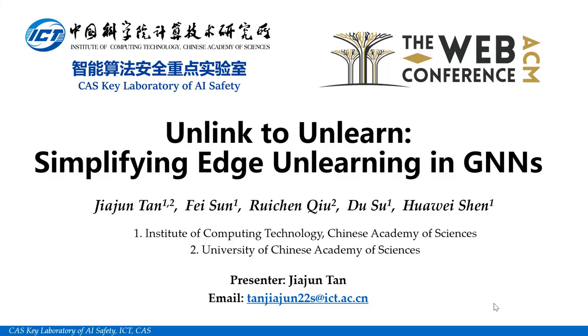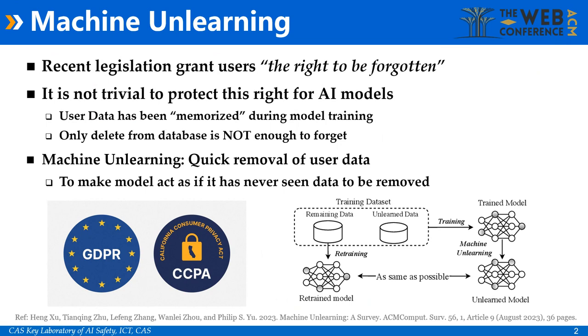Hi, today I'll introduce our paper 'A Link to Unlearn: Simplifying Edge Unlearning in GNNs.' Although machine learning models have achieved great success in various tasks, this advancement inherently comes with the risk of privacy leakage, as training data with sensitive information can be implicitly remembered within model parameters.